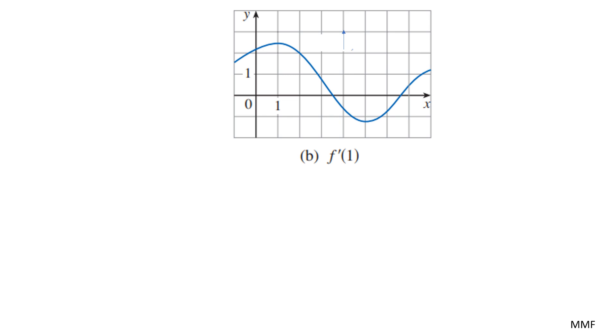For the next one, finding the derivative at x equals 1, we're going to do the same thing. If you look here, you can see the line is pretty much flat. There's basically no rise because it's not going up or down. It doesn't really matter how much you choose for the run. This line is always going to have no change in the rise.